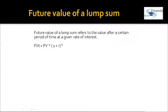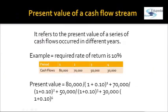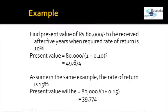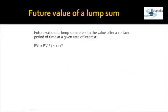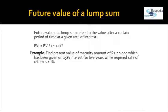Next is future value — the reverse of present value. If 49,674 is the present value, then 80,000 is the future value after five years. Future value is the lump sum amount you receive after a certain period of time at a given rate of interest. Mathematically, future value equals present value multiplied by (1 + rate of interest) to the power of the time period you are investing.